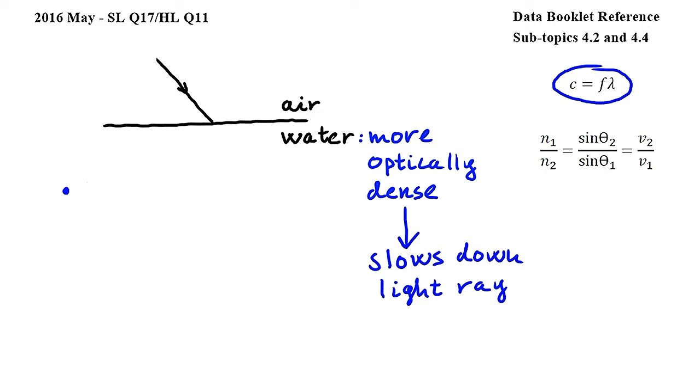As we have seen, the speed of light in water is lower. When a wave passes from one medium to another its frequency doesn't change, so in our equation f remains the same. Since c on the left side of the equation is lower and f on the right side remains the same, we can conclude that lambda, the wavelength, decreases.